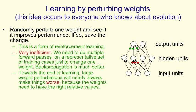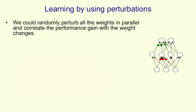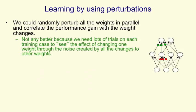An additional problem with randomly changing weights and seeing if it helps is that towards the end of learning, any large change in a weight will nearly always make things worse, because the weights have to have the right relative values to work properly. So towards the end of learning, not only do you have to do a lot of work to decide whether each change helps, but the changes themselves have to be very small. Perturbing all the weights in parallel and correlating the performance gain with the weight changes doesn't really help at all, because you need lots of trials to see the effect of changing one weight through all the noise created by changing all the others.